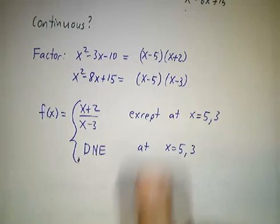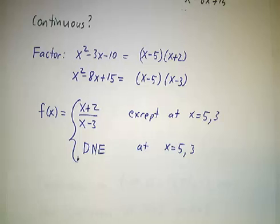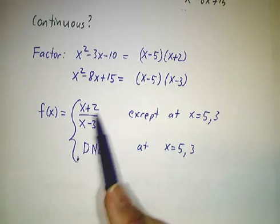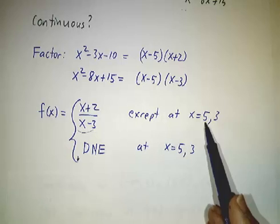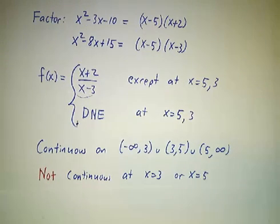Everywhere else, we can cancel the factor of (x-5) from the top and the bottom. And so we get that the function is (x+2)/(x-3) except at 5 and 3. The function doesn't exist at 5 and 3. It's continuous everywhere except at 5 and at 3.